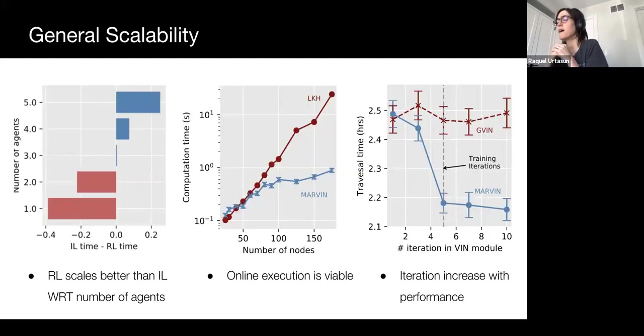We then verified a few more things about our model. Firstly, we determined that agents trained with reinforcement learning scaled slightly better to the number of areas than agents trained with imitation learning. We also determined that the runtime of our algorithm scaled much better than current state-of-the-art. This suggests that we could physically run our algorithm online. We also finally determined that increasing the number of iterations in the value iteration module, even after training, can provide some increasing performance. We believe that this can be attributed to information stored in the latent features of the node encodings.